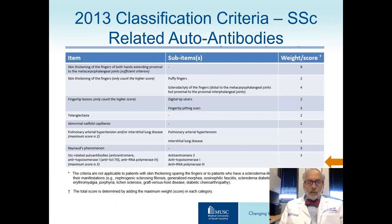Let's begin by discussing some of the blood tests that might be used to help diagnose systemic sclerosis. This slide shows the classification criteria for scleroderma, which were revised in 2013. At the bottom, where the yellow arrow appears, you see a number of different autoantibodies that are useful in classifying patients and even subclassifying them into various disease subsets.